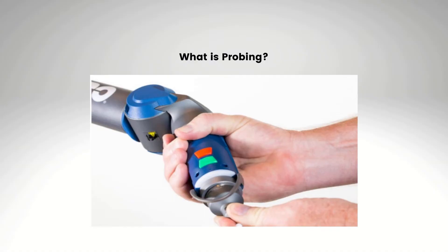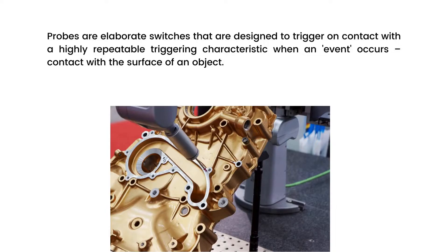What is a probe in metrology? Let us see the definition. Probes are elaborate switches that are designed to trigger on contact with a highly repeatable triggering characteristic when an event occurs. Event in the sense contact with the surface of an object.